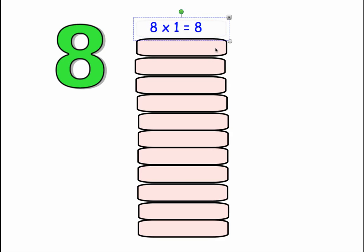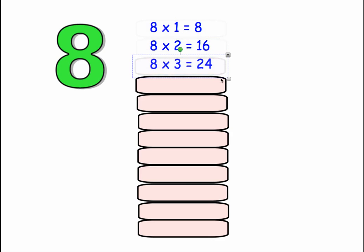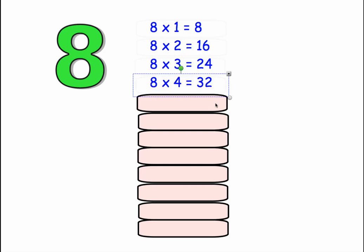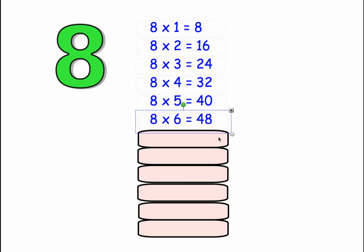8 times 1 equals 8, 8 times 2 equals 16, 8 times 3 equals 24, 8 times 4 equals 32, 8 times 5 equals 40, 8 times 6 equals 48.